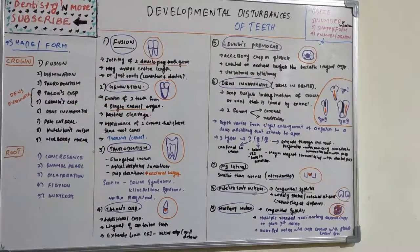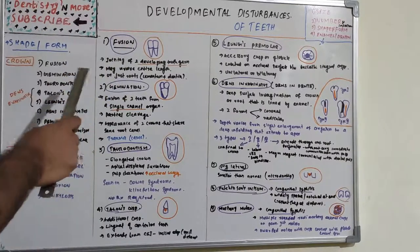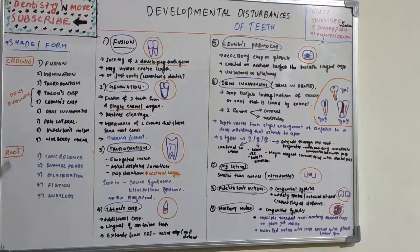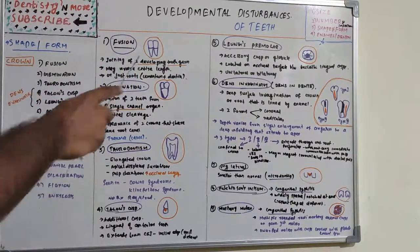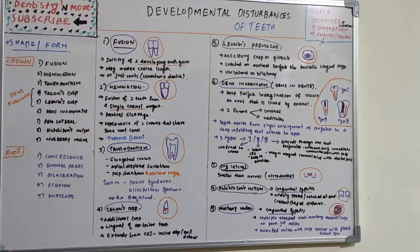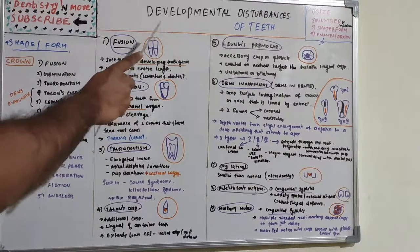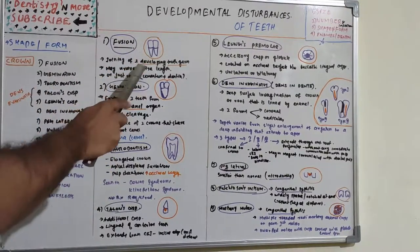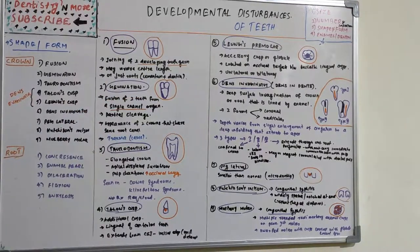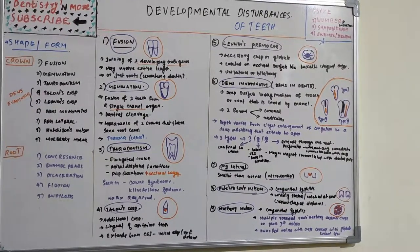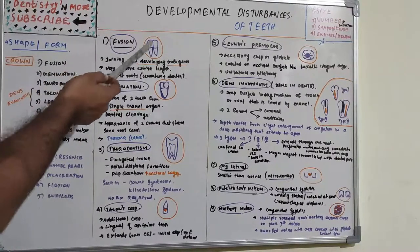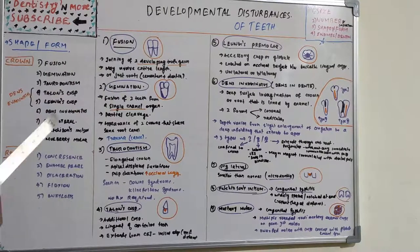Fusion may involve the entire tooth length or just the root. Two tooth germs join together and look like a single tooth, but there will be a slight separation between the teeth. It is a bigger tooth rather than a single normal tooth — two separate developing tooth germs joined together, resulting in a single large tooth structure.